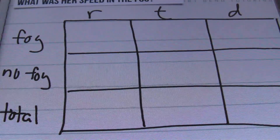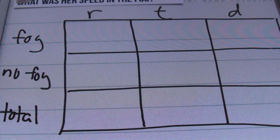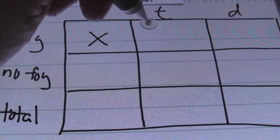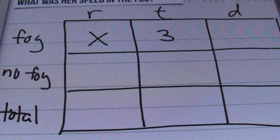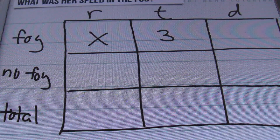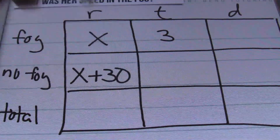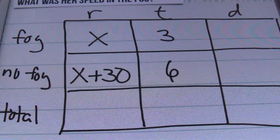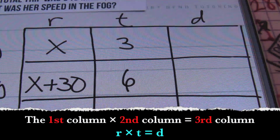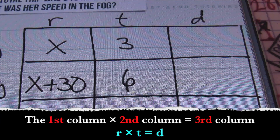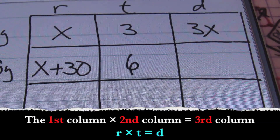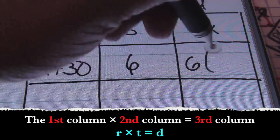So here I have my table set up. We're going to fill in the blanks. We don't know the rate she was traveling in the fog, so that's going to be our unknown — variable X. We know she drove in the fog for three hours. She then increased her speed by 30 miles per hour and drove six more hours, so her rate becomes X plus 30, and her time is six hours.